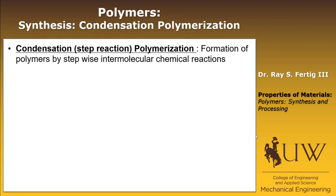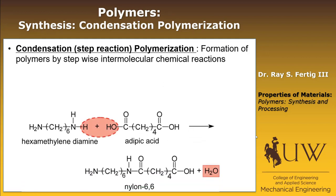The second type of polymerization is called a condensation polymerization reaction, or a step reaction. This is the formation of polymers by stepwise intermolecular chemical reactions. It's easiest to talk about an example: here's the formation of nylon-66. We have the monomers — the first is hexamethyldiamine, and the second is adipic acid. Those react to form nylon-66 plus water.